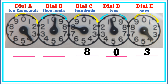In dial B, the pointer is moving counterclockwise. It has just passed nine and is approaching zero, but it has not yet reached zero, so we record it as nine.